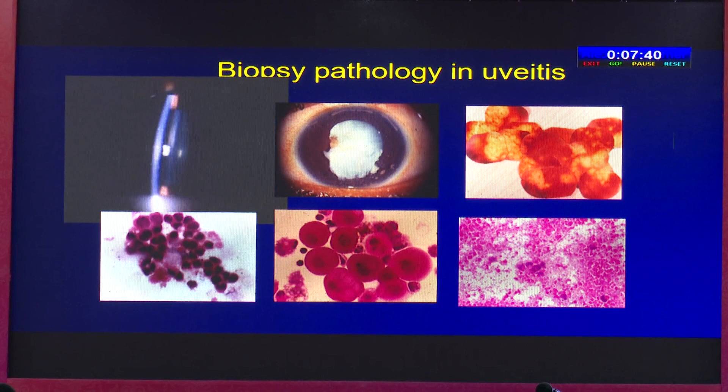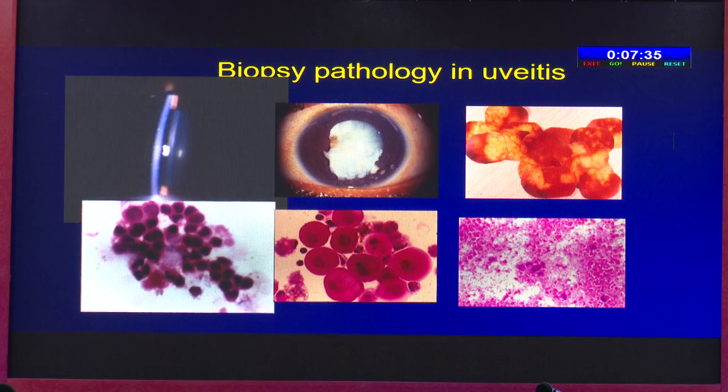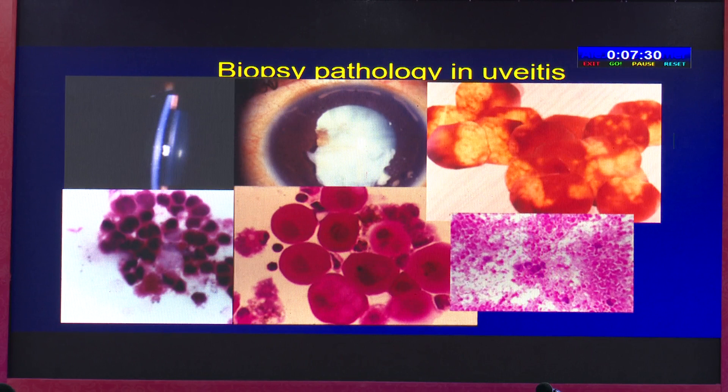Biopsy pathology of uveitis can be of various types: anterior chamber, intraocular biopsy, or chorioretinal biopsy. And it can provide very valuable diagnostic information.